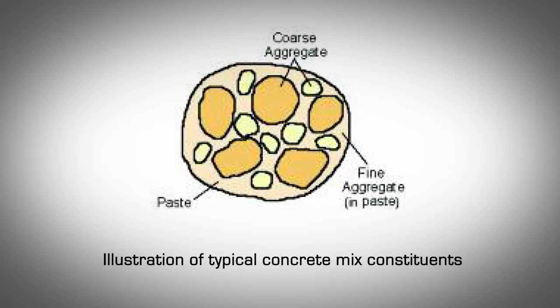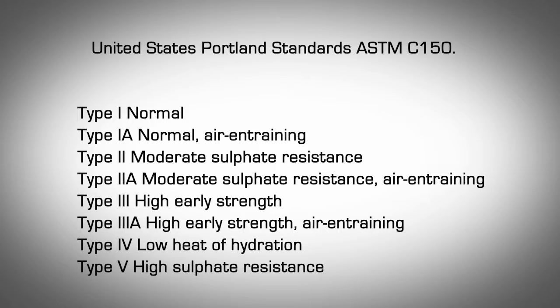There are many different types of cement available, but for the purpose of this manual we will concentrate on the most common Portland cement. In the United States, Portland cements will meet the specifications set forth by the ASTM C150. ASTM standards are the most widely used and referenced specifications for cement and concrete materials. ASTM C150 covers 8 types of Portland cement.